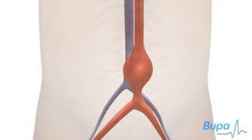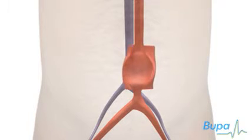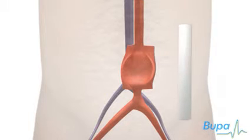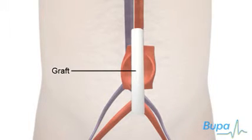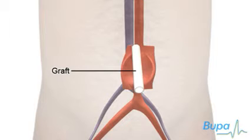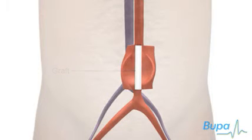A graft may be placed in the damaged section of the abdominal aorta to repair it. The graft can be made with a piece of blood vessel taken from another place in the body, or can be synthetic.